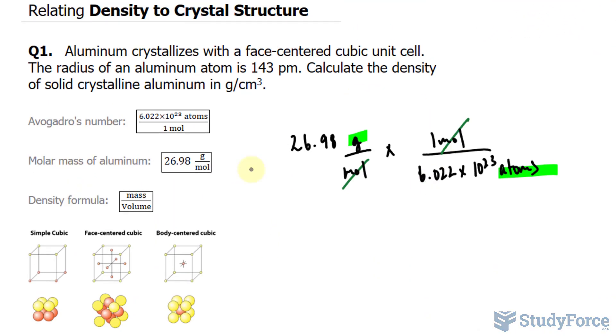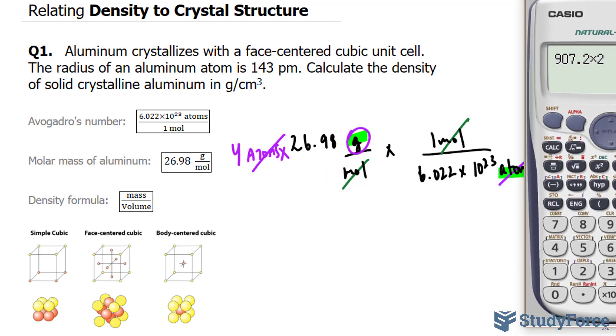So I'll multiply the product of these by four atoms and then the atoms unit will cancel out. So I'll show that right here and this cancels out the atoms unit, leaving us with exactly what we want, the mass.